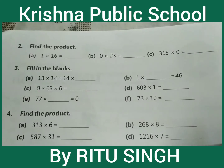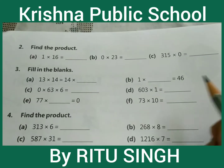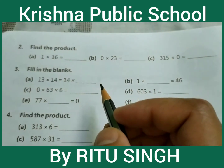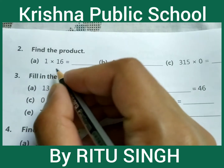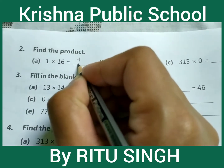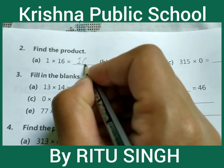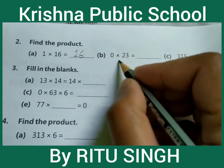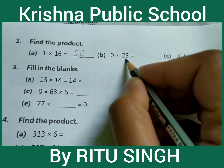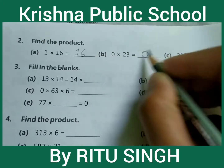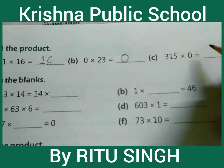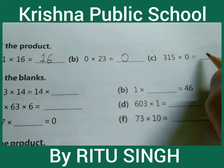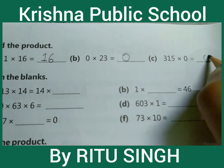Page number 48, question number 2: find the product. 1 into 16 equal to 16. 0 into 23 equal to 0. 315 into 0 equal to 0.